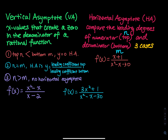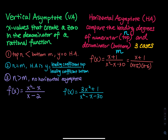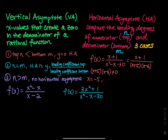For this function, how about the vertical asymptote? You have to factor the denominator. The numerator is x plus 1. The denominator factors as x plus 5 times x minus 6. When x equals negative 5 or x equals positive 6, the denominator equals zero. So x equals negative 5 and x equals 6 are vertical asymptotes.